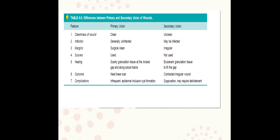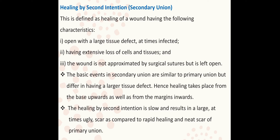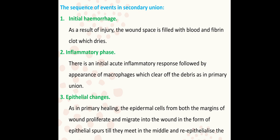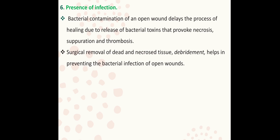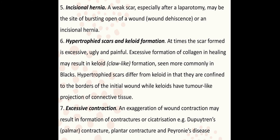In today's class we have discussed the healing process. There are two types: primary union and secondary union. The first three steps are common to both. Secondary healing has extra steps — granulation tissue formation and wound contraction. Please leave any questions in the comment box. Thank you so much.